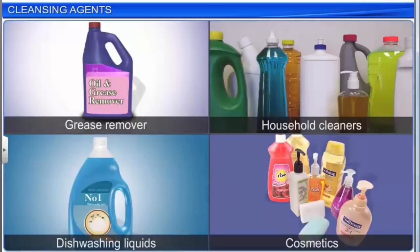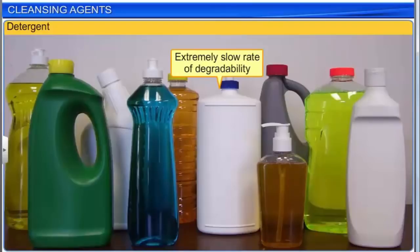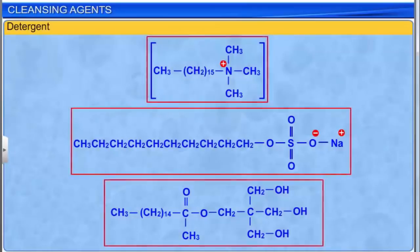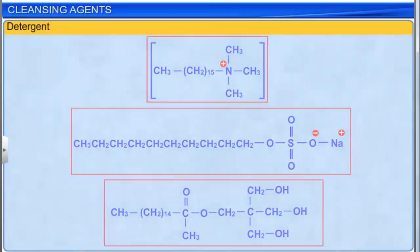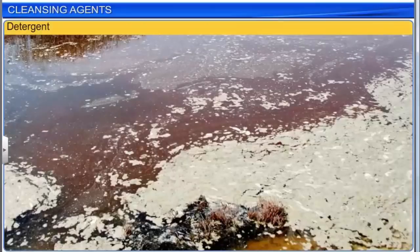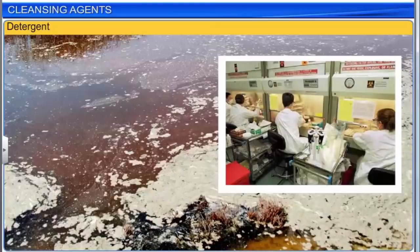One of the dangers posed by detergents is their extremely slow rate of biodegradability. This is because their hydrocarbon chain is highly branched, which makes it very difficult for bacteria to degrade. As a result, the detergents go on accumulating and when they reach water bodies, they cause pollution and foaming. This problem persists despite the treatment of polluted water. Therefore, currently research is being conducted to control and minimize the branching of the hydrocarbon chain in order to make detergents more easily biodegradable.